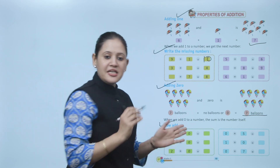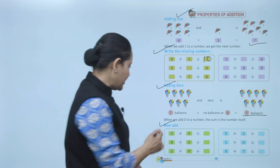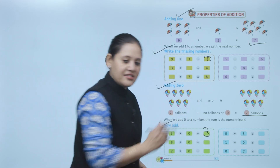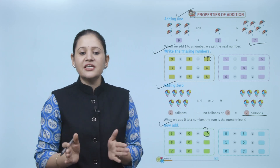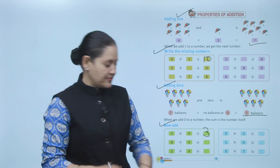Three plus zero means the number itself, that is number three. Like this you have to add zero.